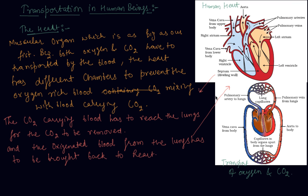We can follow this process step by step. Oxygen-rich blood enters the left atrium — the left atrium relaxes when collecting this blood. It then contracts, passing the blood into the next chamber, the left ventricle. When the muscular left ventricle contracts, the blood is pumped out to the body.